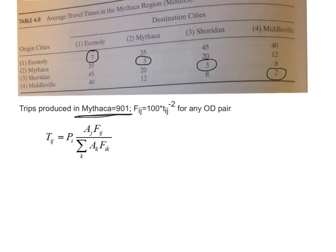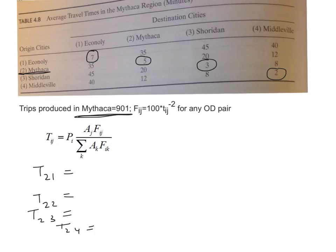I'm only trying to distribute the trips that are being produced in Mythaka, which is 901. So what I'm looking for is the values T21, T22, T23, and T24 — only the trips produced in Zone 2, which is Mythaka. So my Pi will always be equal to P2, which is 901.